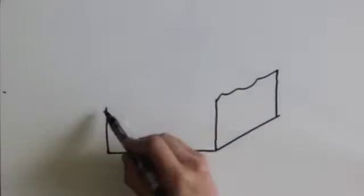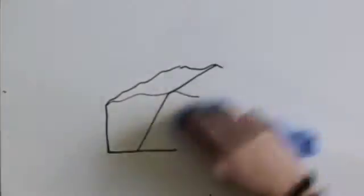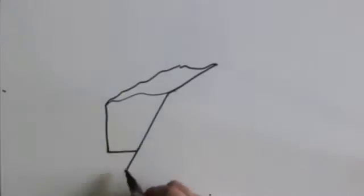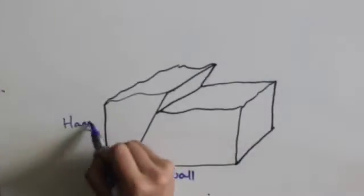Moving on to reverse faults. These are the opposite of normal faults, so when stress is applied, the hanging wall moves up and the foot wall moves down, like in this diagram.